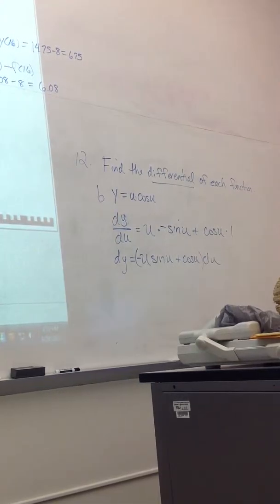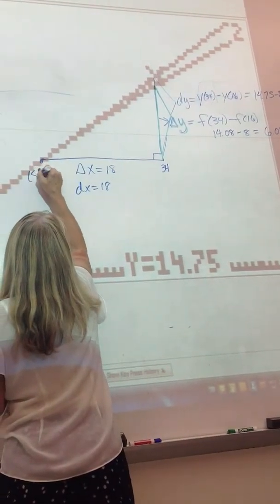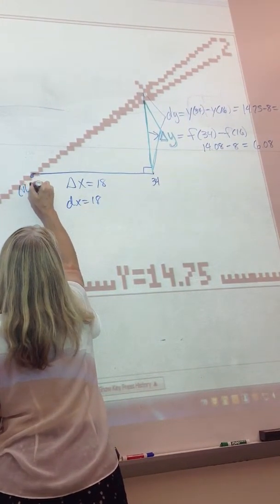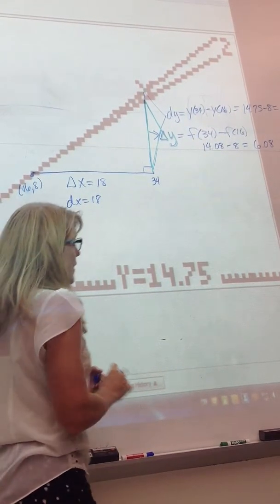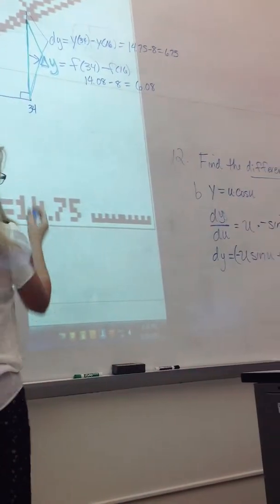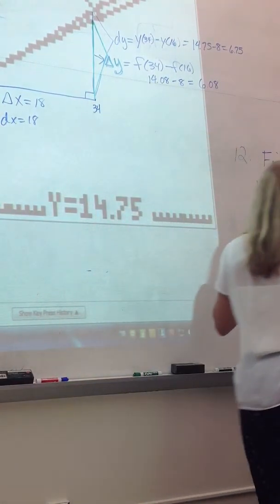Okay, so again, I had that picture up here. I'm going to work the one we did. If we want to, we can graph it later. Again, delta x for the example I have up here is 18, and dx is also 18, because that point was 16. But doing our example, which is not this graph, let's just pick a couple of points. They did not give us points, I'm just picking points.